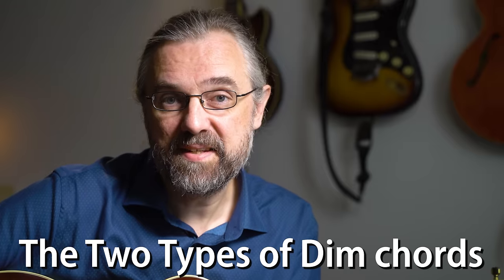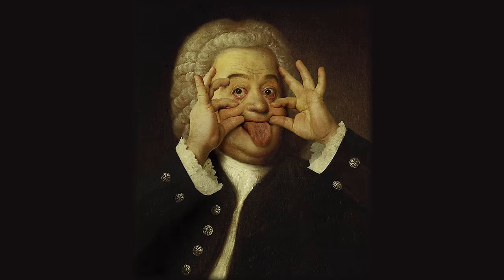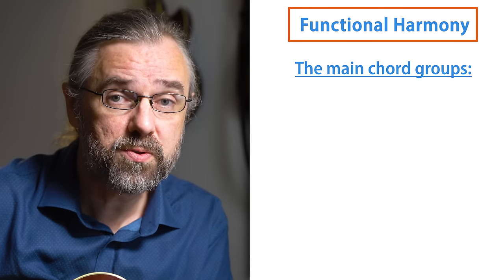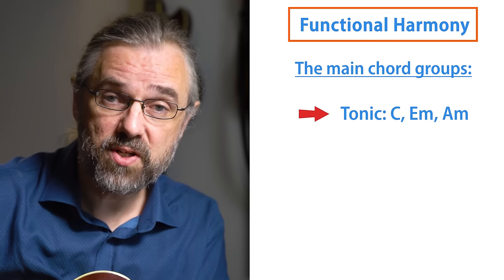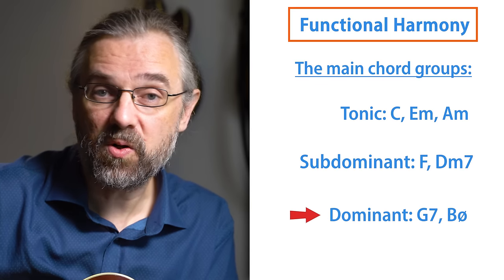I split the diminished chords into two groups because I'm thinking in terms of functional harmony or tonal harmony — a shocking new way of looking at chords that's about 400 years old. The way I do this is by thinking about all chords split into roughly three groups: tonic, subdominant, and dominant.